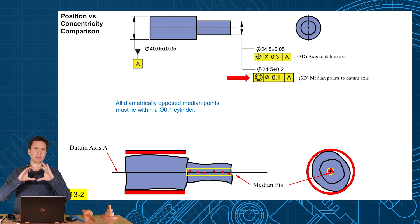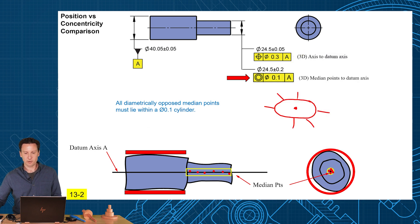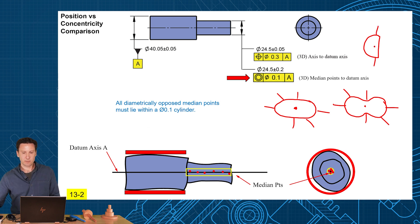What concentricity is supposed to do is allow unsymmetrical form variation. Let's say our shaft comes in a little bit oval — oval is fine, because the opposing median points are right on center. Even the part could look like a peanut shape, as long as it's a symmetrical peanut, because all opposing median points stay right on center. What concentricity doesn't like is when the part becomes D-shaped or offset in an unsymmetrical way. Then most opposing median points may be perfect, but on the asymmetric side, the opposing median point would be off.